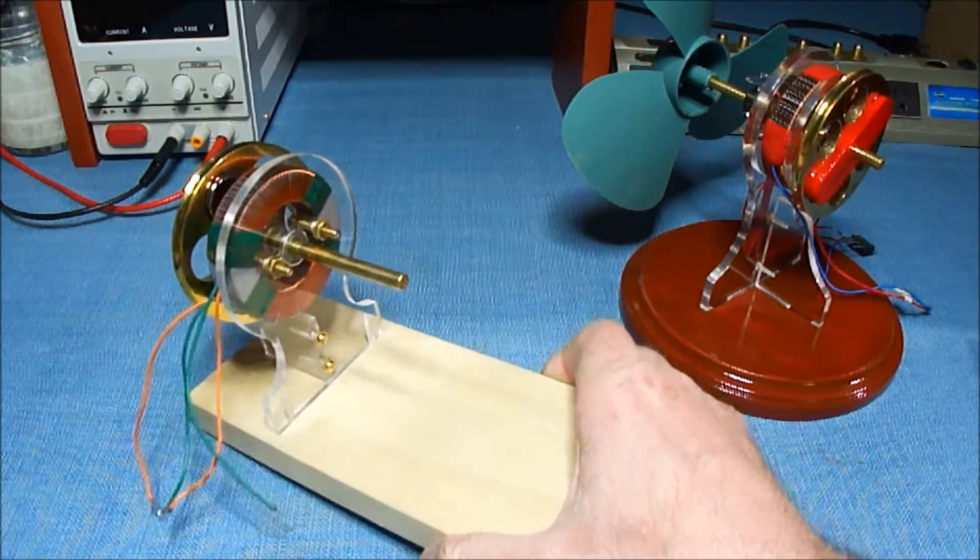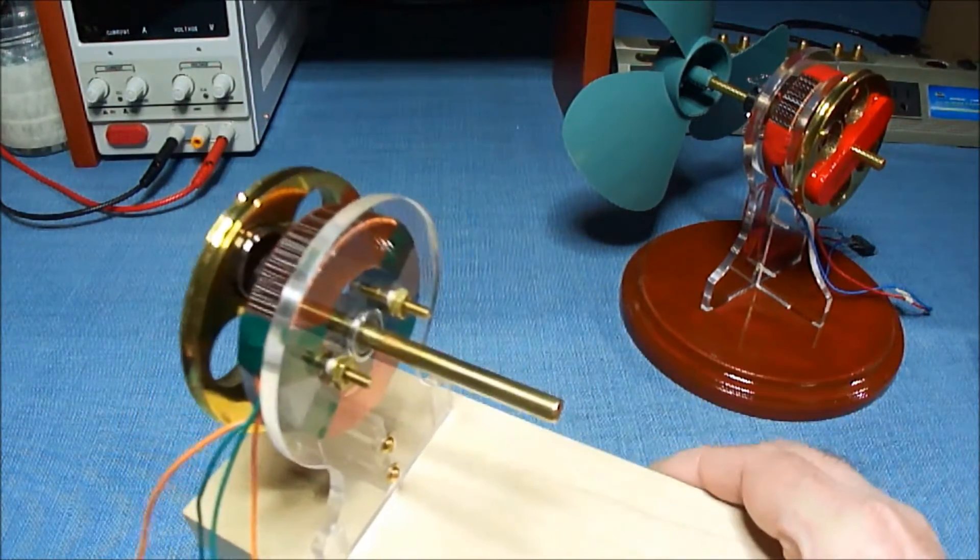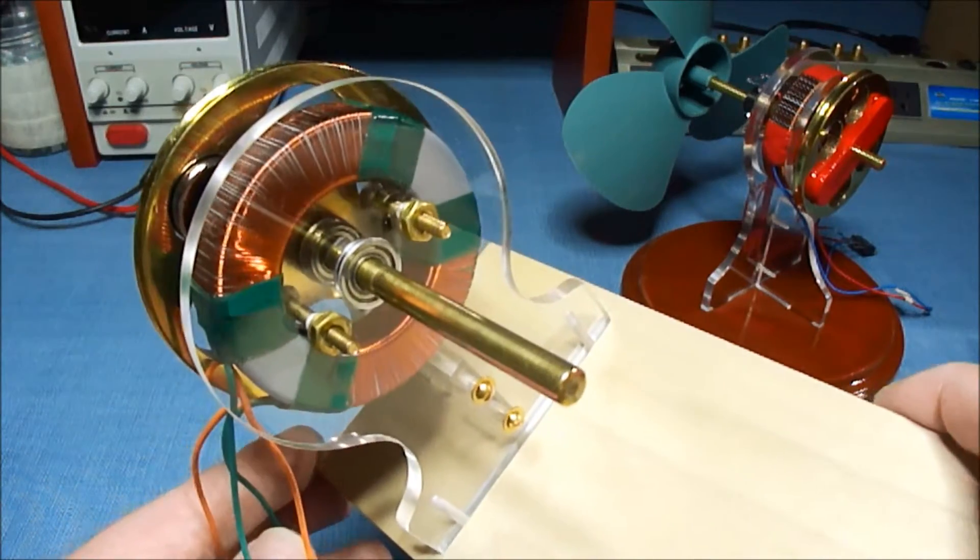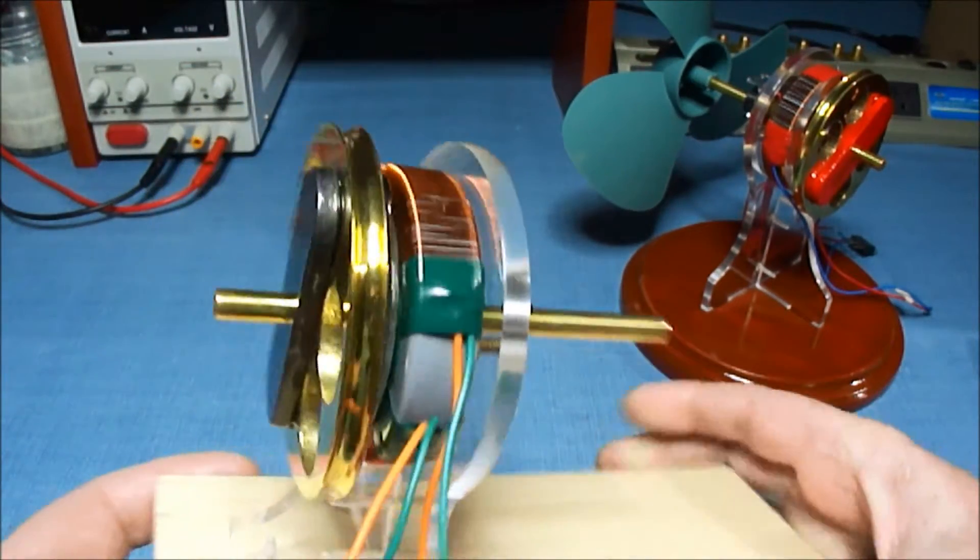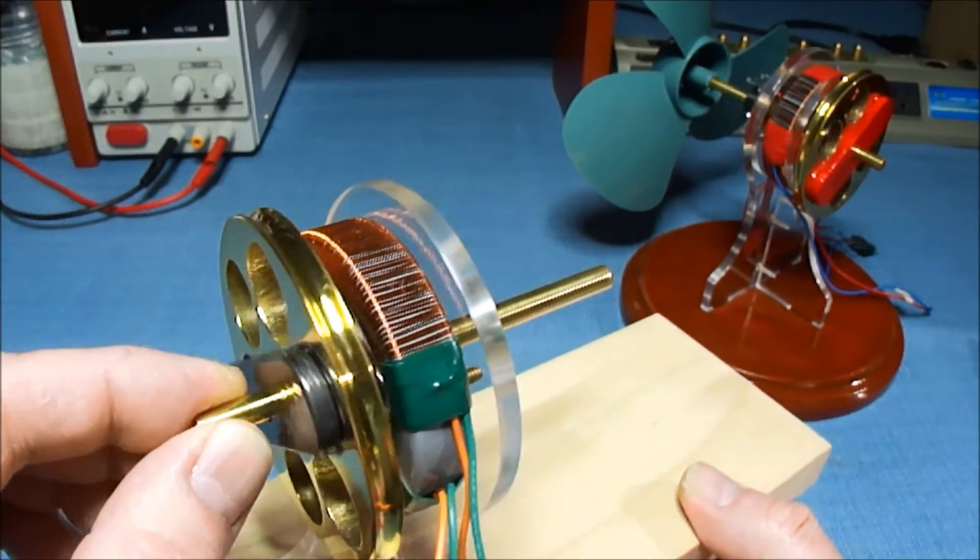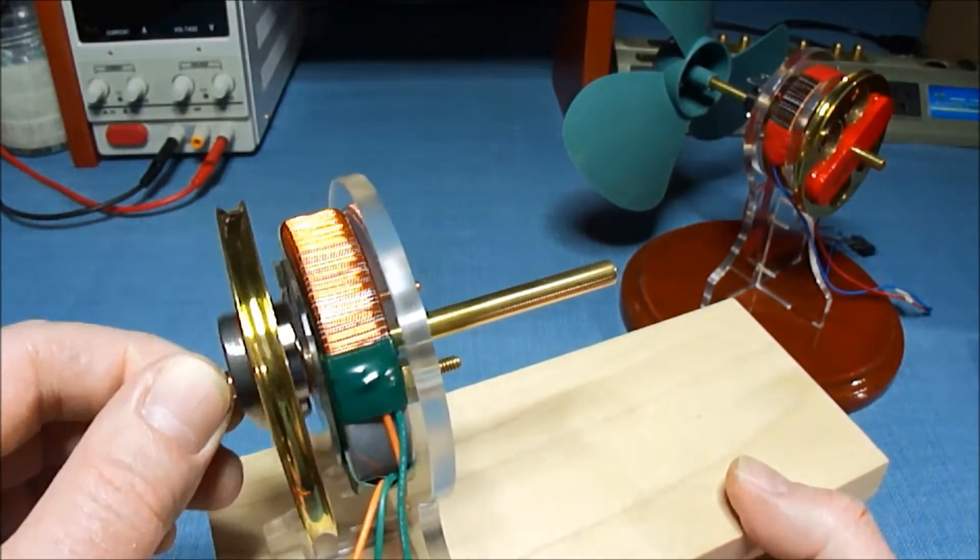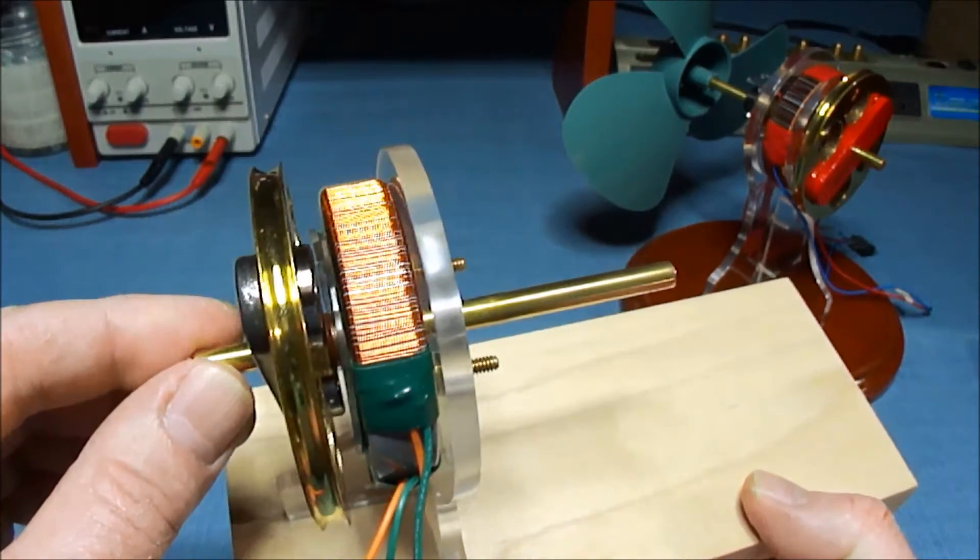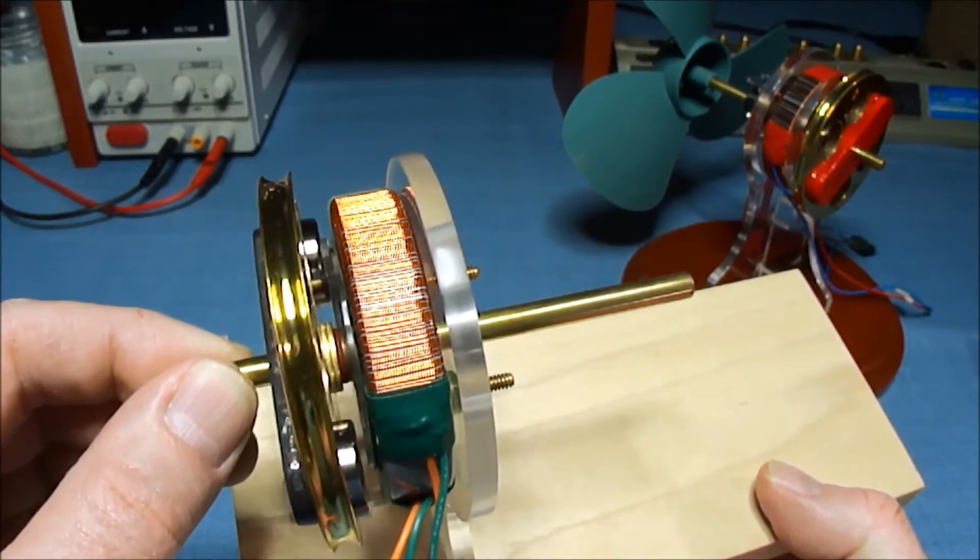The generator I built is pretty much the same as the Coglus toroid motor. You have the toroid there. And the flywheel has two magnets on it with the steel keeper. And I changed this design a little bit. And I used a step bearing plate so I could get the magnets closer.